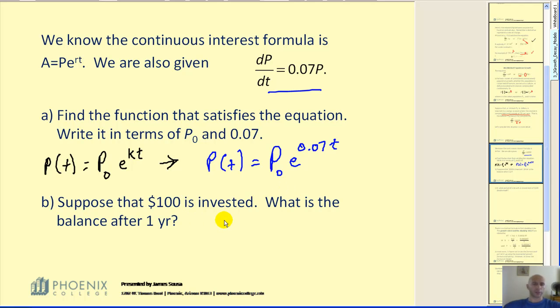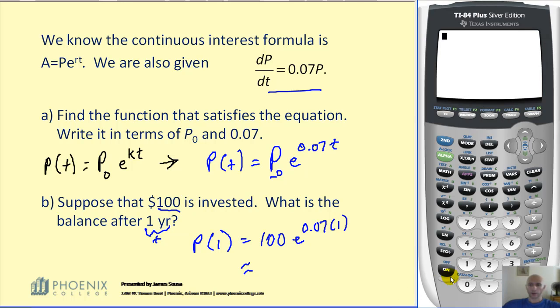Suppose you invest $100. What is the balance after one year? Well, if we invest $100, that would be P sub 0, and t would equal one year. We need to find P(1), which is equal to 100 times e^(0.07 times 1). Let's go ahead and calculate this. 100. If we hit second natural log, it'll bring up e. And then you can just type in our exponent. And it looks like we have $107.25.